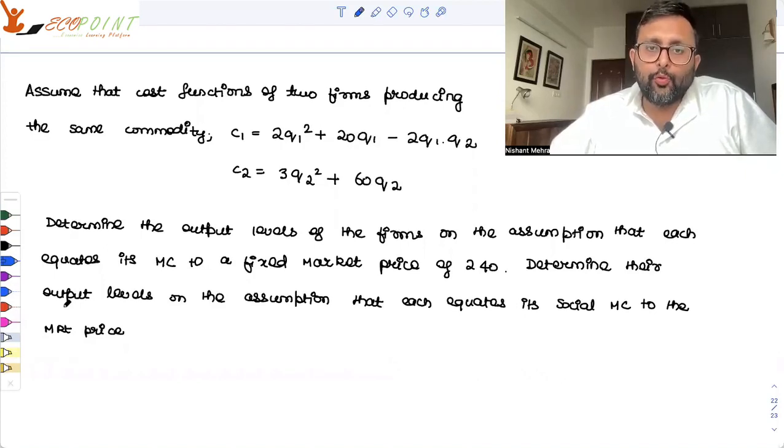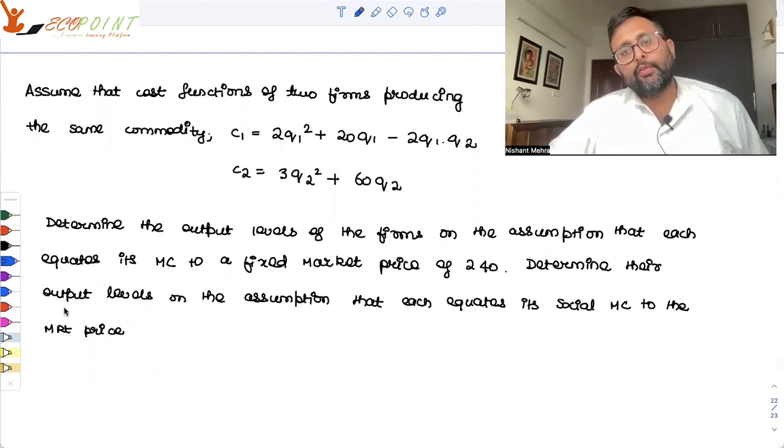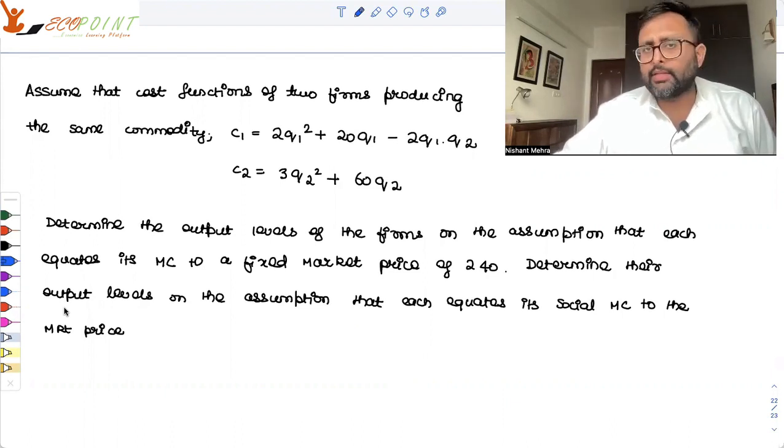Assume that cost functions of two firms producing the same commodity are given. You are given with the two cost functions. Determine the output level of the firms on the assumption that each equates its marginal cost to a fixed market price.